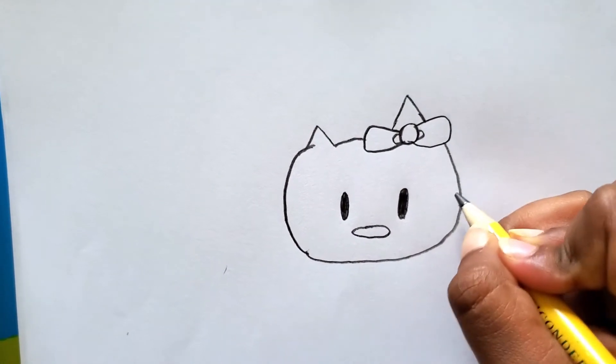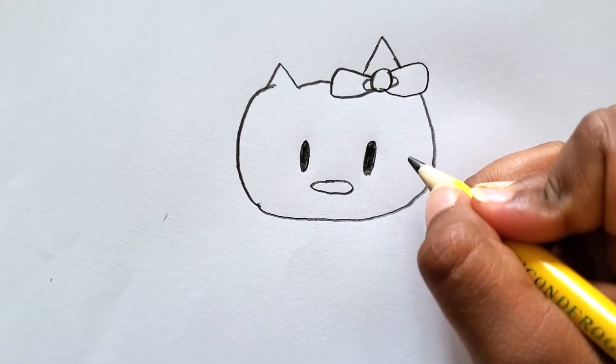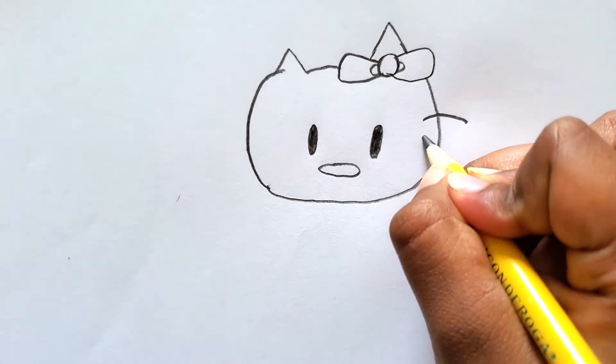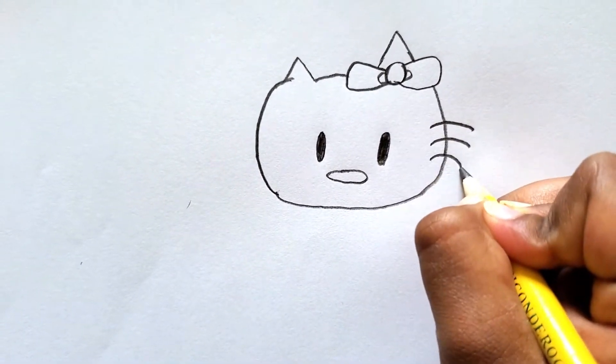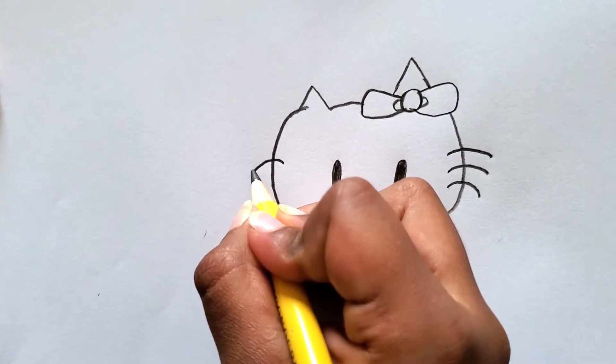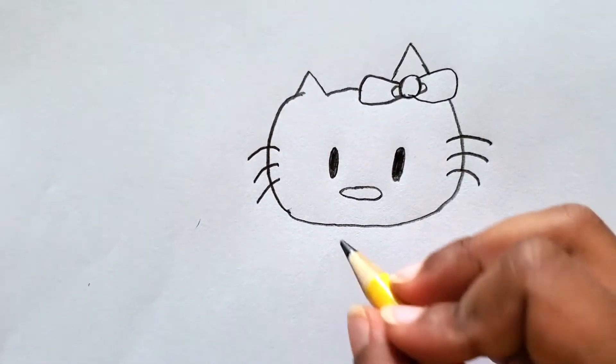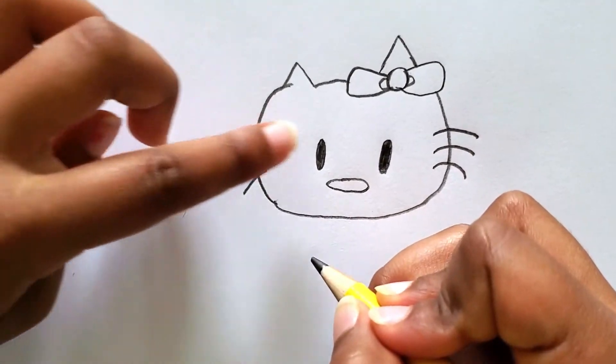And then let's draw her whiskers. What would Hello Kitty do without her whiskers? So one, two, three, and go to the other side, draw one, two, three like this.